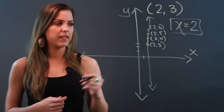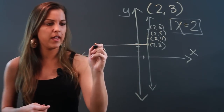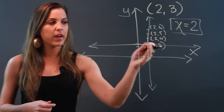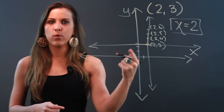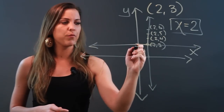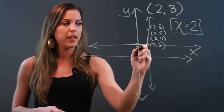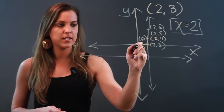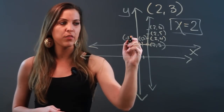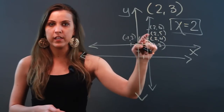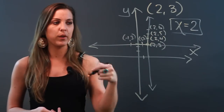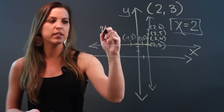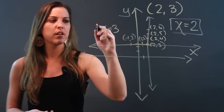Now for the horizontal line that passes through this point, I'm going to draw a line that is parallel to my x-axis. What I notice here is that the y-coordinate will always be consistent. For example, this point here is (2, 3), this one is (1, 3), this is (0, 3), this is (-1, 3). So my y-coordinate is consistent — it's always going to be 3. So the equation for the horizontal line is going to be y equals 3.